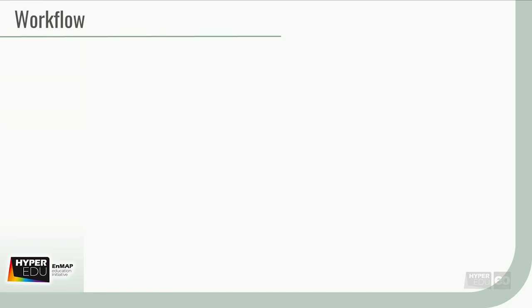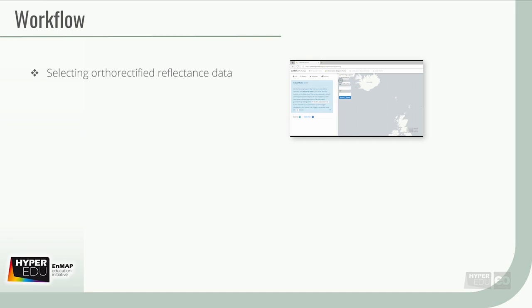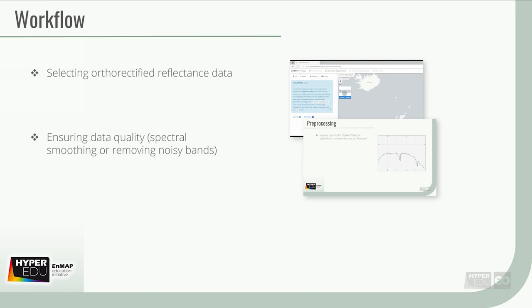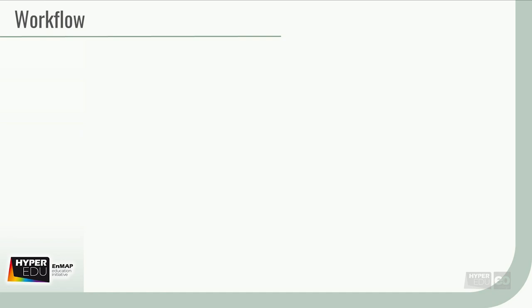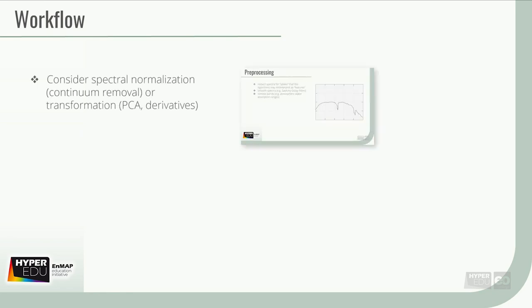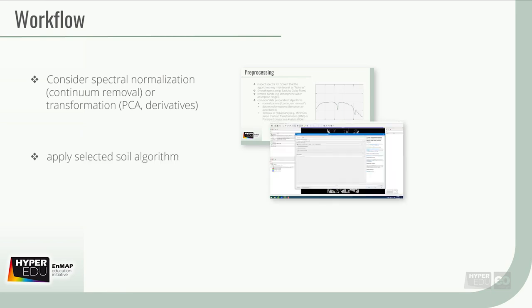Okay, summing up. In order to get the most out of your data, the overall workflow for the retrieval of soil properties using imaging spectroscopy data consists of selecting orthorectified reflectance data, ensuring data quality, for example, by spectral smoothing or removing noisy bands, selecting bare or at least semi-bare soil pixels to which the subsequent algorithms can be applied, masking using spectral features or spectral unmixing can assist with that. Once the data is readily prepared, consider spectral normalization, for example, continuum removal or another transformation like principal components, higher derivatives or absorbents. And finally, apply your selected soil algorithm, whether to your small local dataset or a large database from the web. From a simple spectral index to a sophisticated model. If you like, you can project the quantitative soil values onto geographical maps.